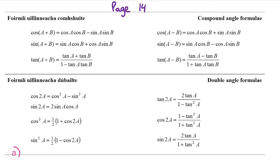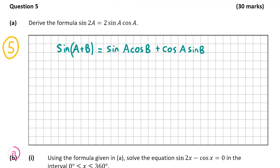We're going to use this formula here on page 14. This tells us that sine(a + b) is equal to sine a cos b plus cos a sine b. Rather than having sine(a + b), I'm going to have sine(a + a), as this will help me work out sine 2a. So that means sine(a + a) is equal to sine a cos a plus cos a sine a.